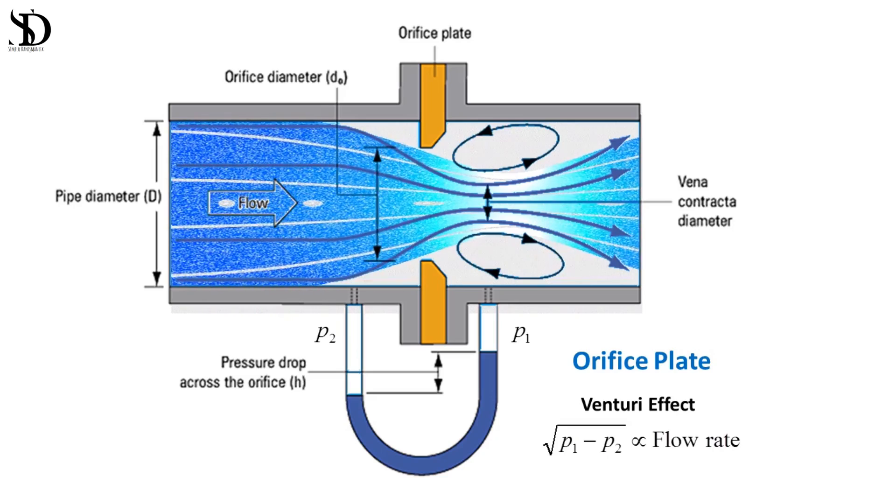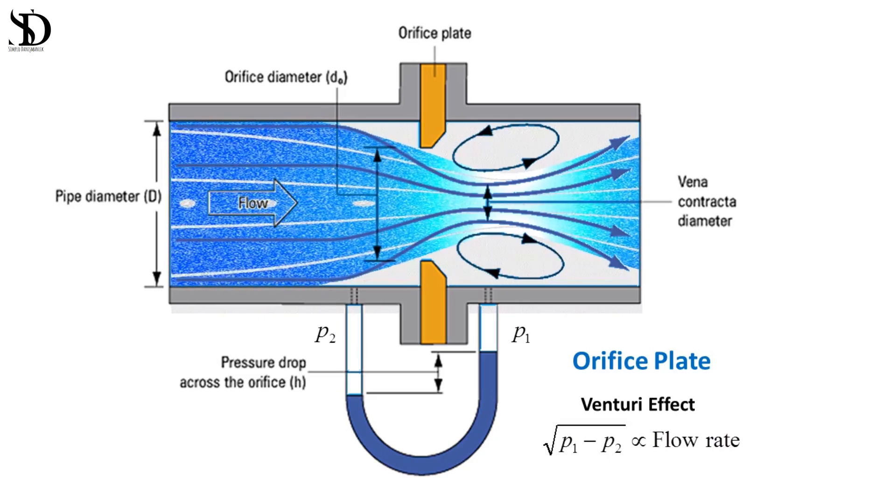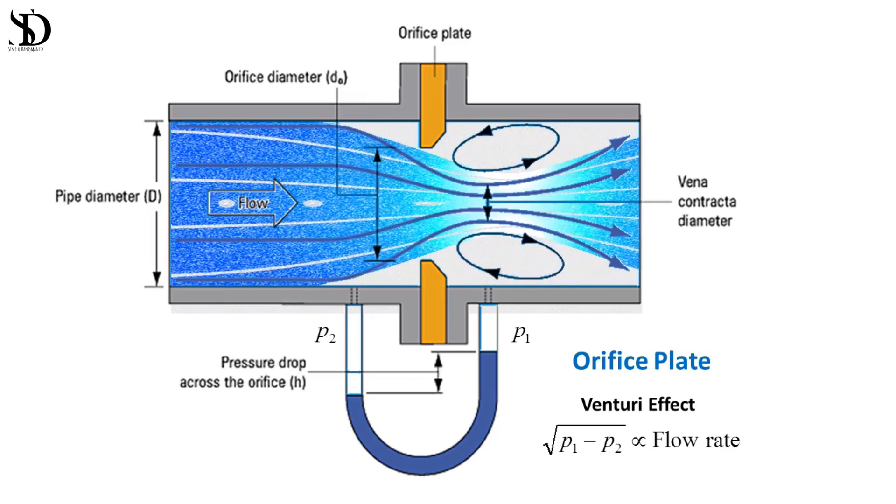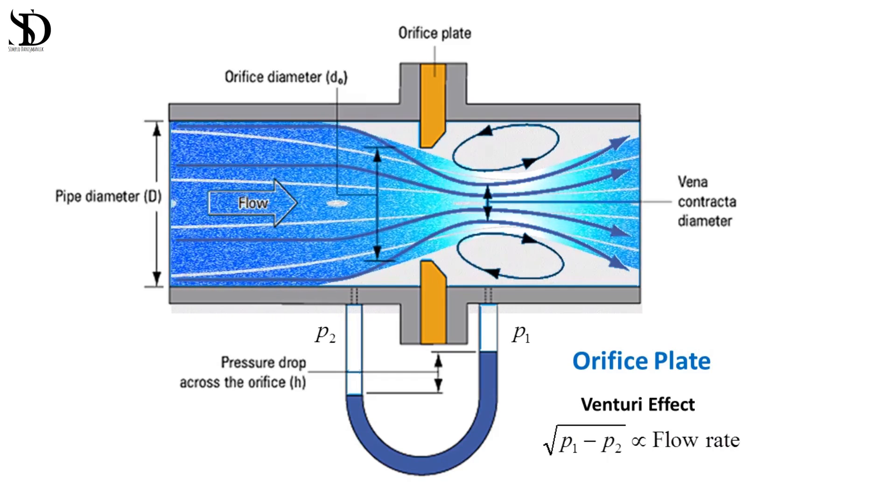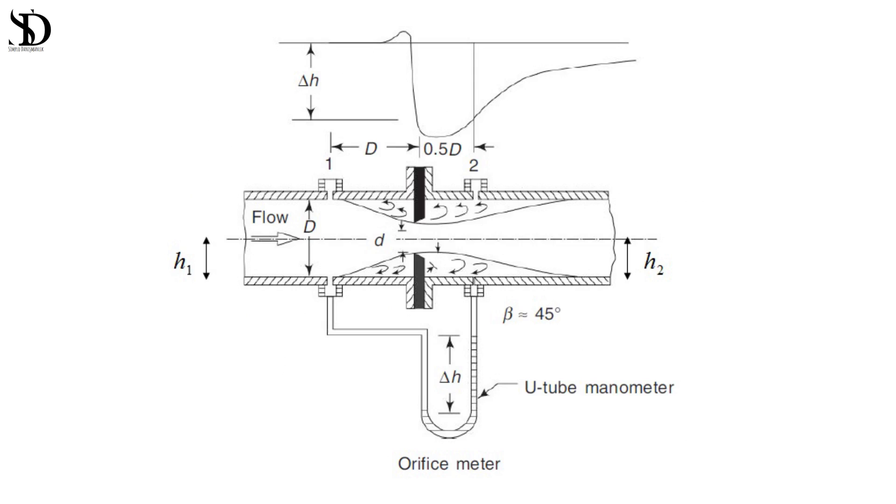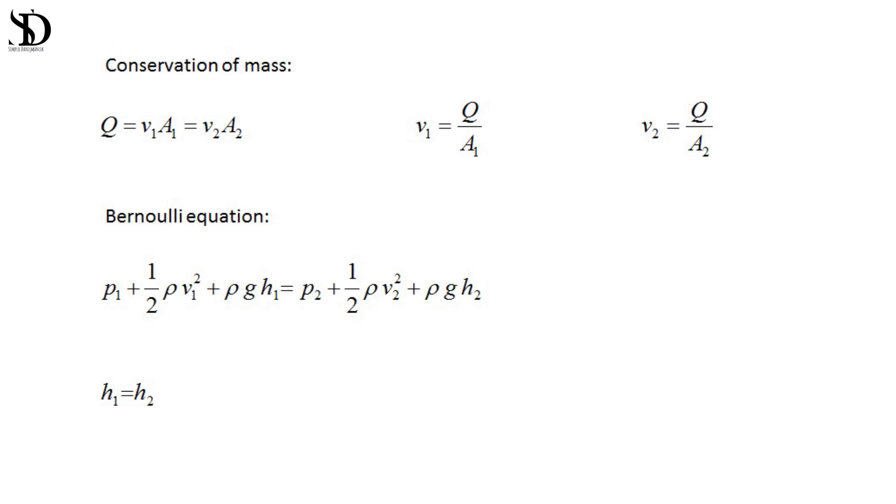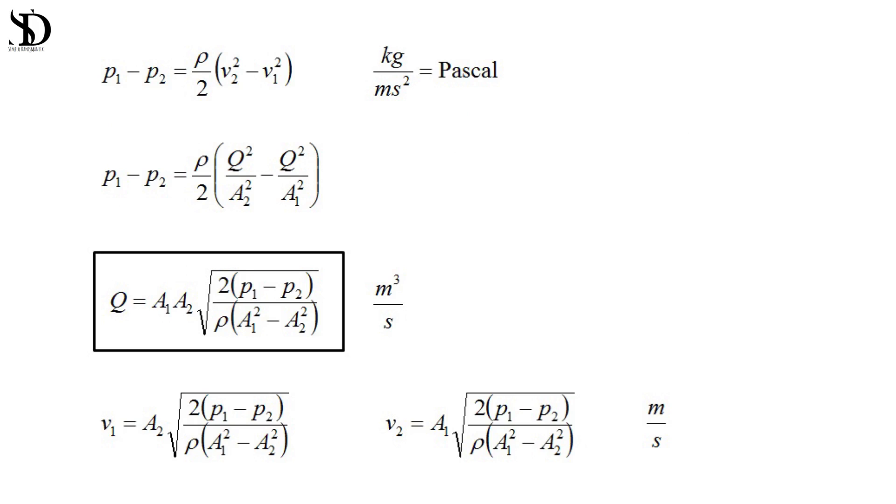As fluid passes through the orifice, it creates a pressure drop across the plate, allowing for the determination of flow rate based on the measured pressure difference. Orifice plates create a significant pressure drop and are suitable for turbulent flow conditions, however their usage might lead to energy losses. These plates come in various configurations such as concentric, eccentric, or segmented, catering to specific flow measurement needs.